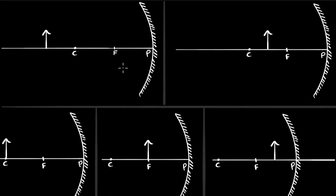Let's draw ray diagrams to represent images for concave and convex mirrors. Let's start with the concave mirror. In the first case, we have an object beyond C. Where will the image be? For this, we can draw four rays of light.